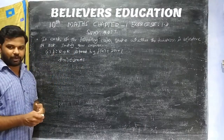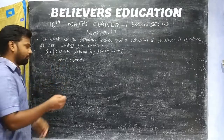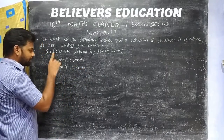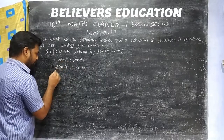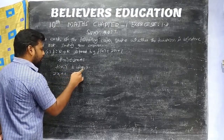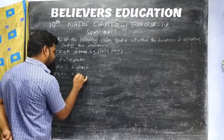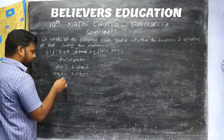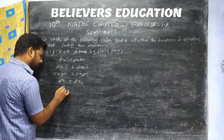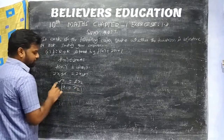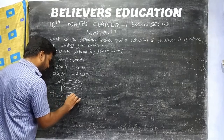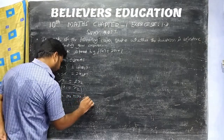First, we have a one-to-one function with two different conditions. We set x1 equal to x2, and show that x1 and x2 are equal. This proves it is a one-to-one function.